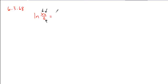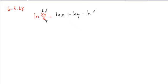So when we expand this out, we get ln of x — a positive. y is also from the numerator, so it's positive. And z is from the denominator, so we'll express it as a minus ln of z. This would be the expanded form.